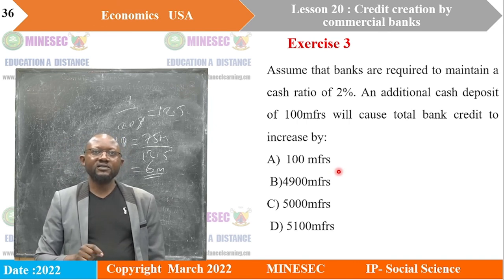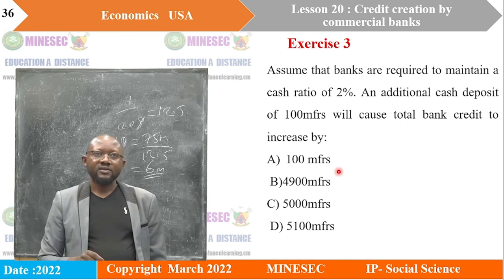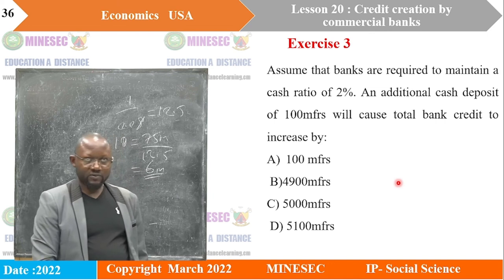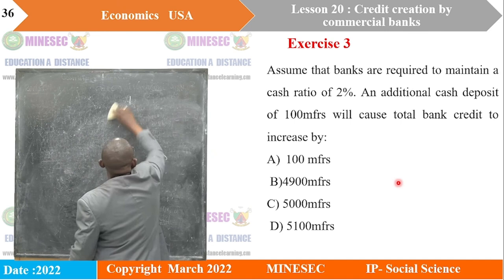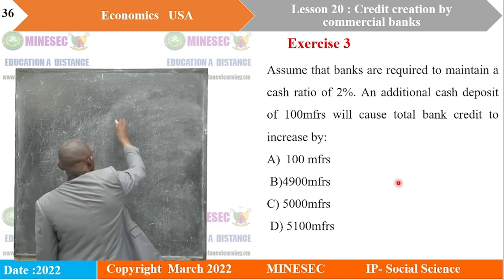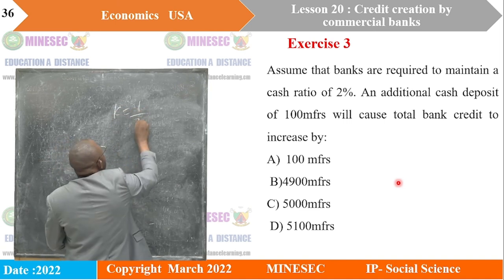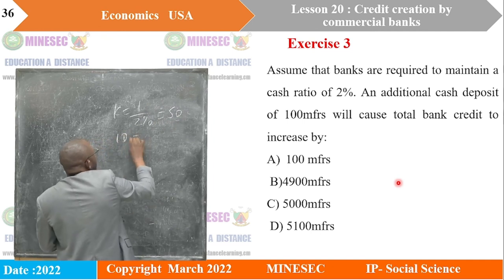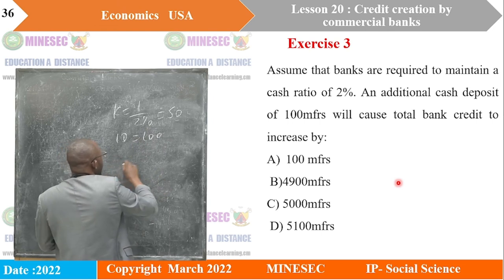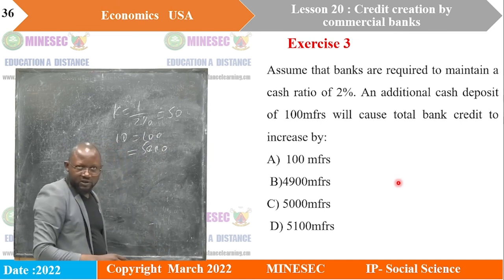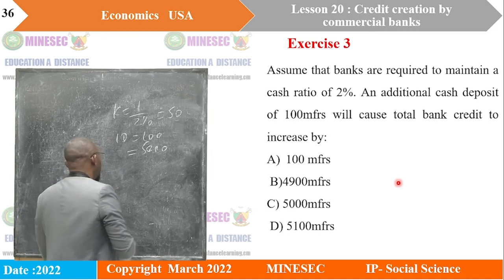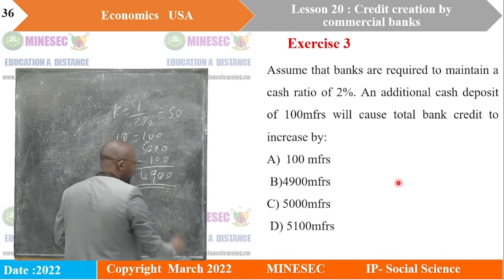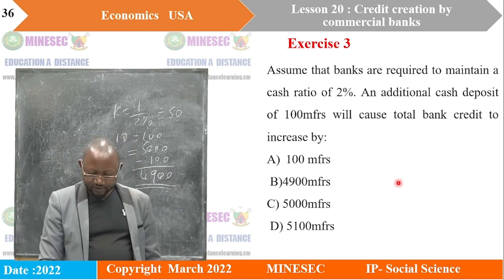Exercise 3: Banks are required to maintain a cash ratio of 2%. An additional cash deposit of 100 million francs — what will total bank credit increase by? The money multiplier is 1 divided by 2%, which equals 50. Maximum amount is 50 times 100 million equals 5,000 million. The additional deposit is 5,000 minus 100 equals 4,900 million francs. The answer is B: 4,900 million francs.